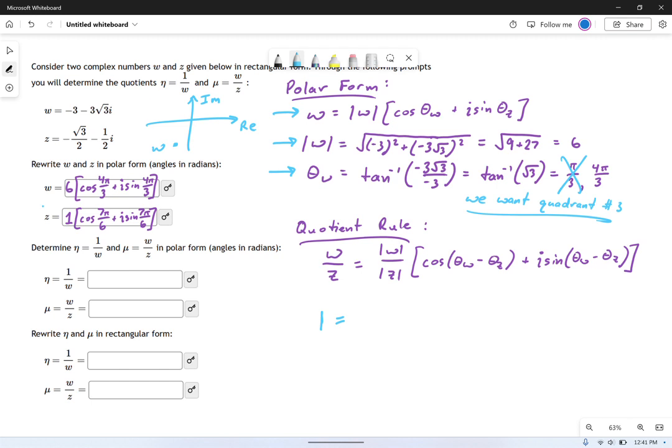And you can write it this way. You could say the number one equals one, right? That's its modulus, times the cosine of the angle. Now, what angle is associated with the number one? Well, if I were to plot one, it'd be right there. It's on the real axis. That's an angle of zero.